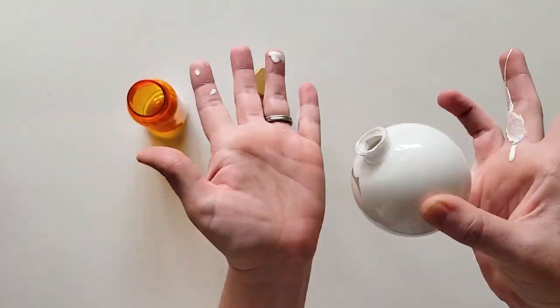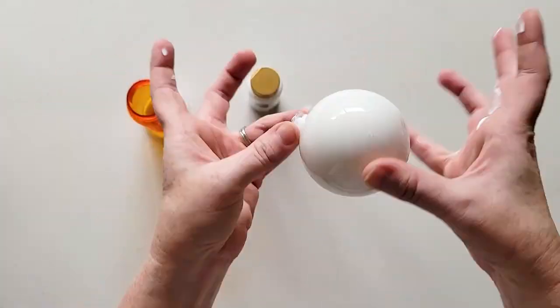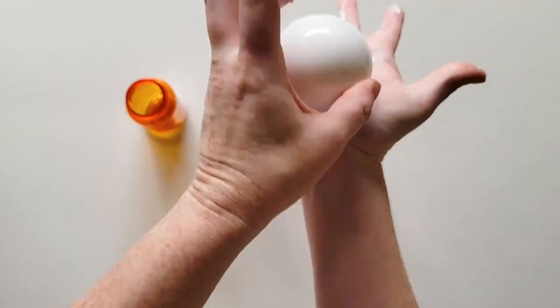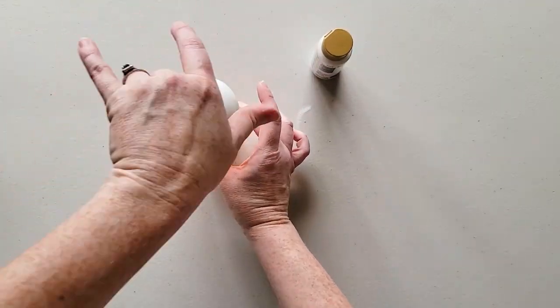you're going to invert the ornament over a cup or a medicine bottle to let the excess drain and to let the paint dry completely. So if you use lots of paint, then it's just going to take a lot longer to dry.